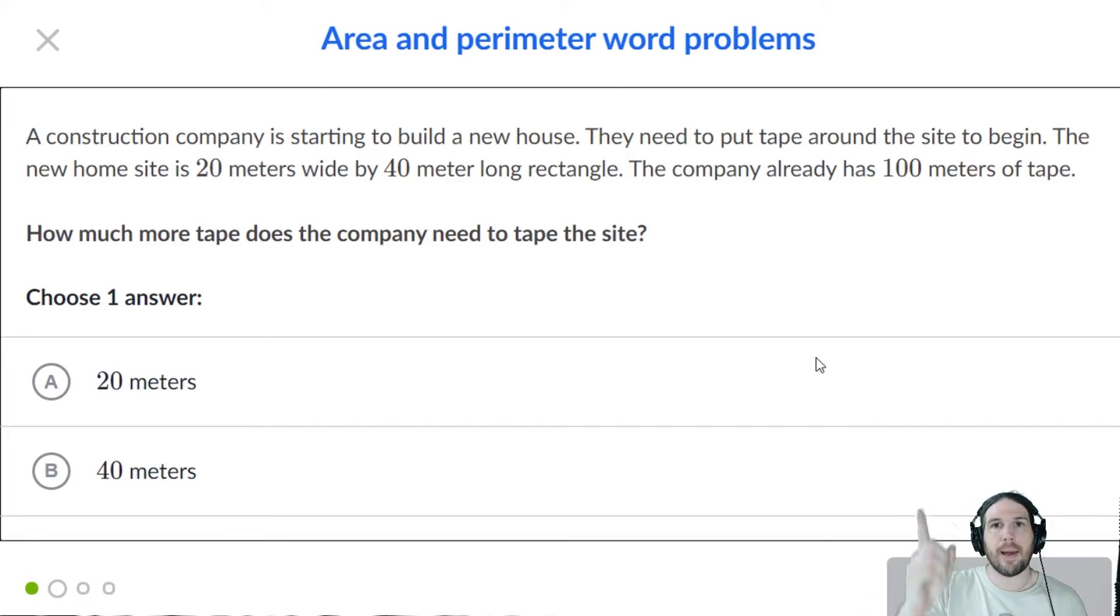So that when your student hears words like around the site, there can be an automatic switch in their head that goes, oh, if you say around the site, you're probably talking about perimeter. Not necessarily, but that's the assumption we're going to start with. And in this case, it will end up working out. And we are going to draw a diagram again.